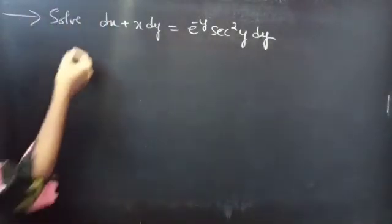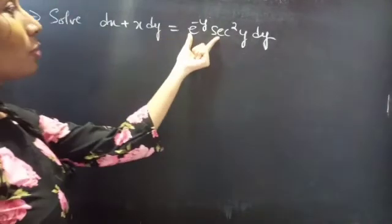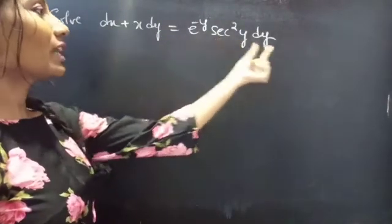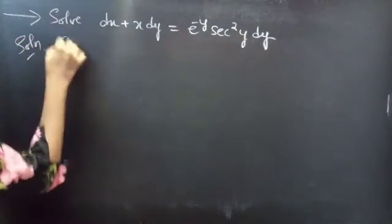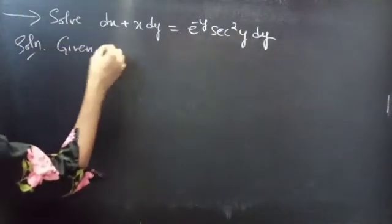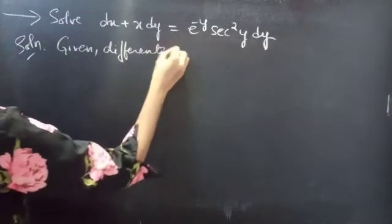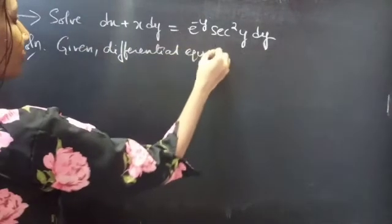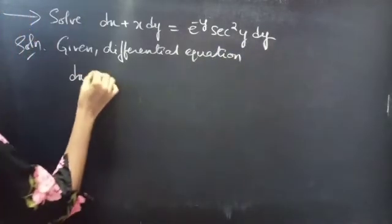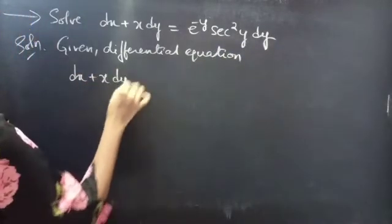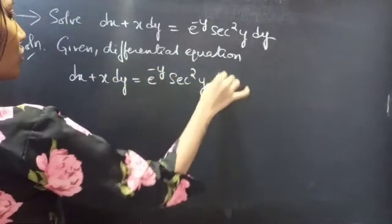Problem. Solve: dx plus x into dy equals to e power minus y into secant square y dy. Given differential equation: dx plus x dy equals to e power minus y secant square y into dy.